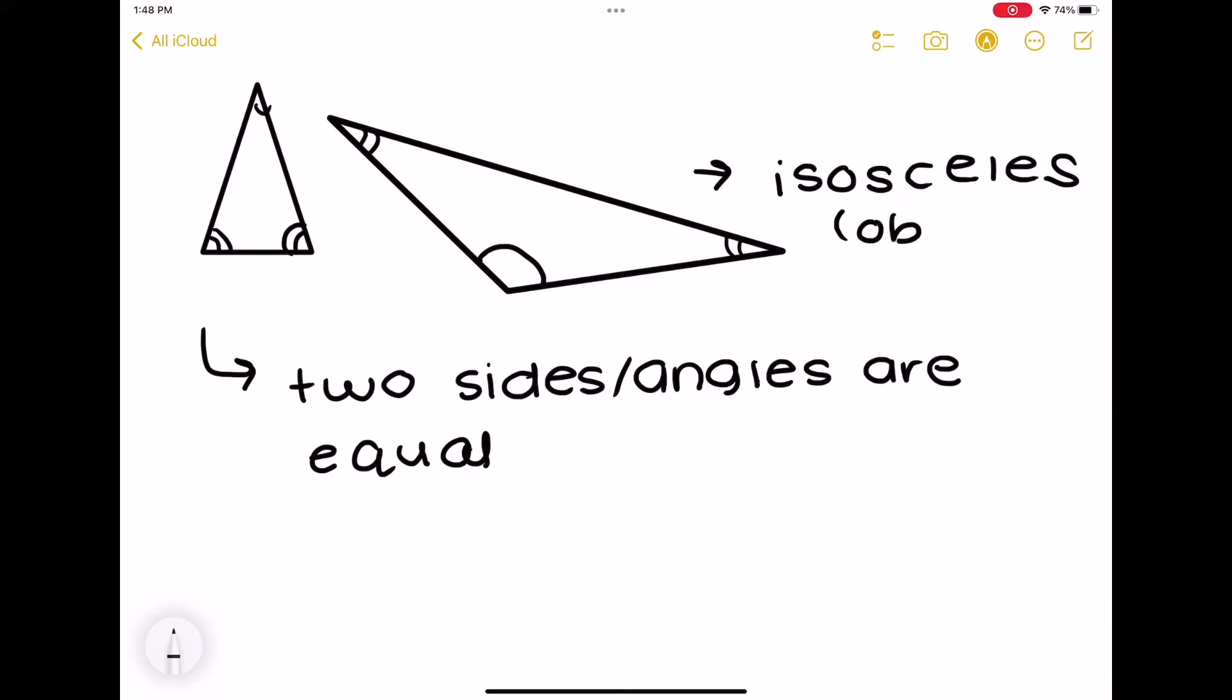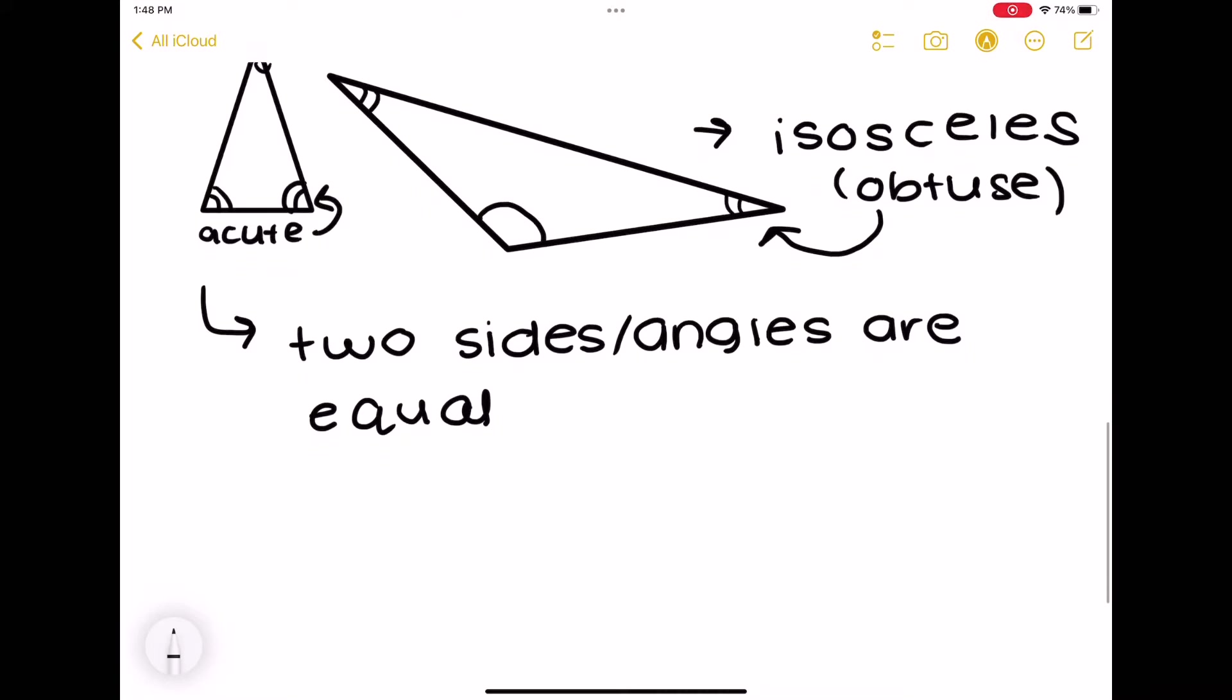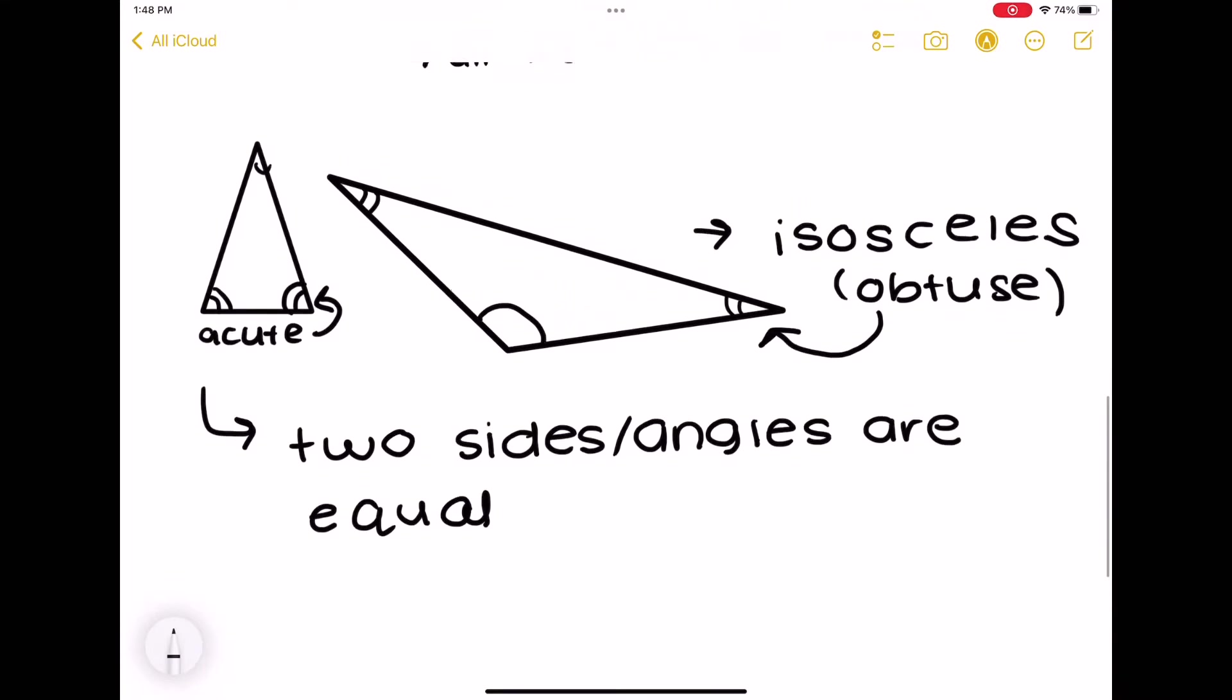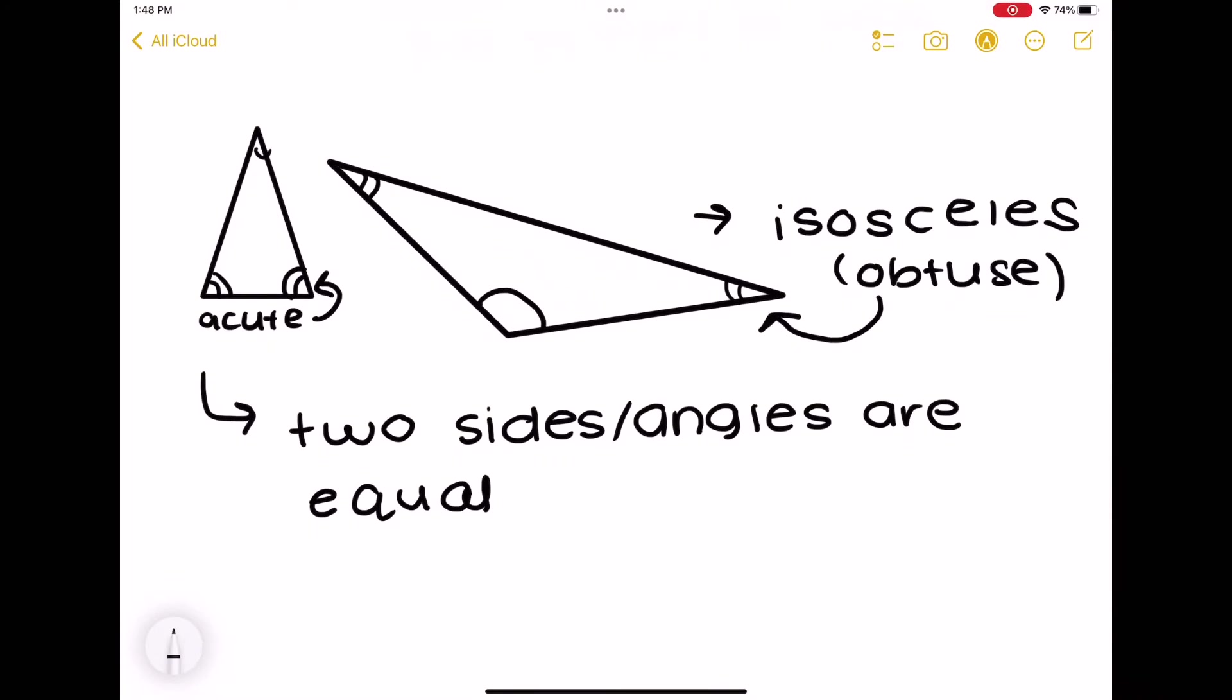Even though they're both isosceles, this one on the right is obtuse and the one on the left is acute. So the reason why is the largest angle in the first one, well actually all of them, are acute. However, in the second one, the largest angle is obtuse, making it an obtuse triangle.